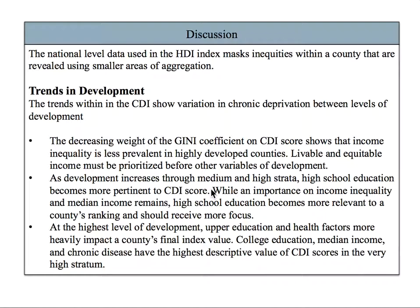By calculating an index value on the county level and including community level data, geographic variation in human development becomes clear. Counties close in proximity have very different CDI values, showing that development does not happen equally across the country. Our findings show these important trends in chronic deprivation between levels of development.